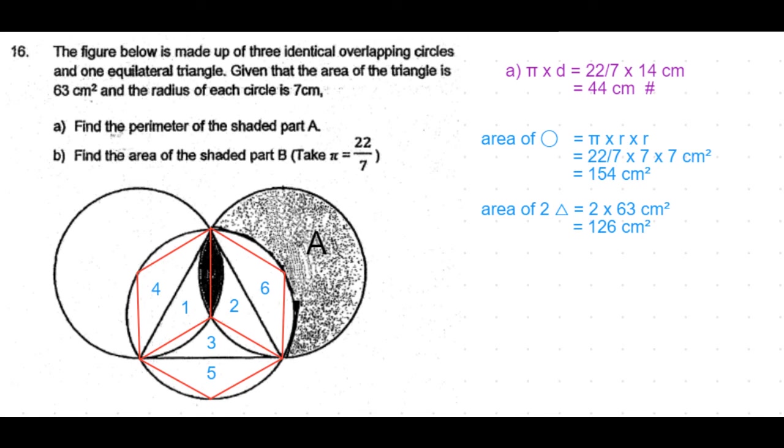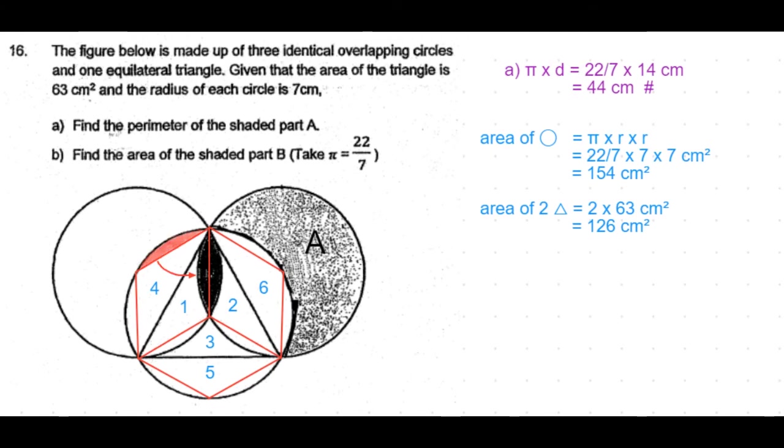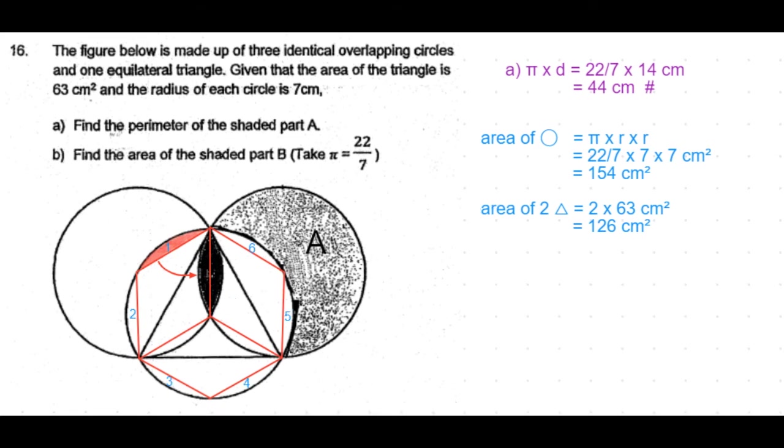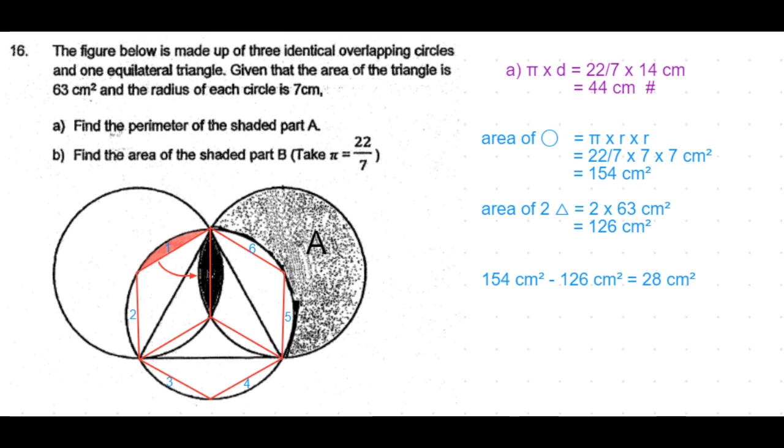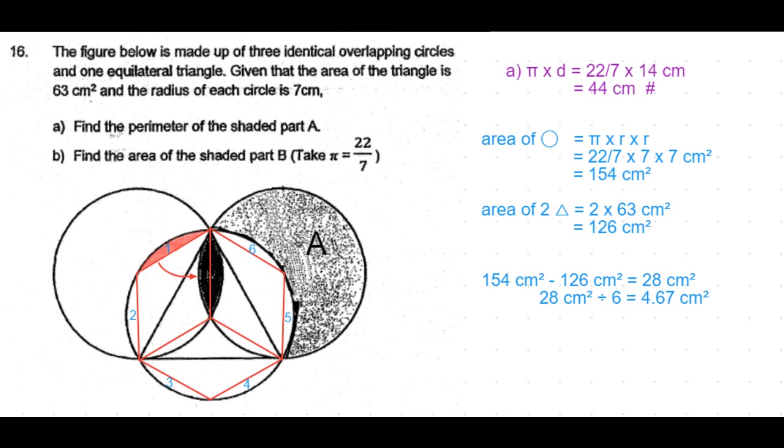Now if we subtract the area of the hexagon from the area of the circle, we get six small portions left out around the hexagon. I have shaded one such section. Area of the circle minus the area of the hexagon is 28 cm square. Now this 28 cm square is the six parts. So one part is 28 divided by 6 which is 4.66 cm square.